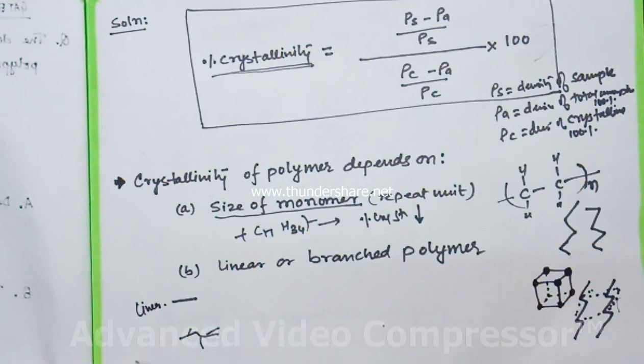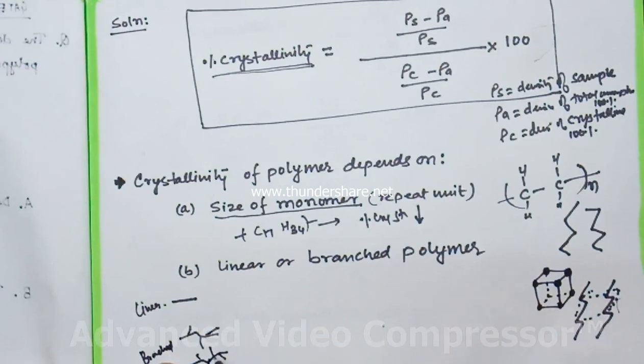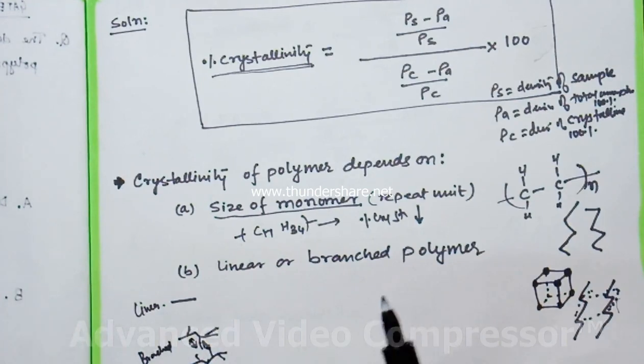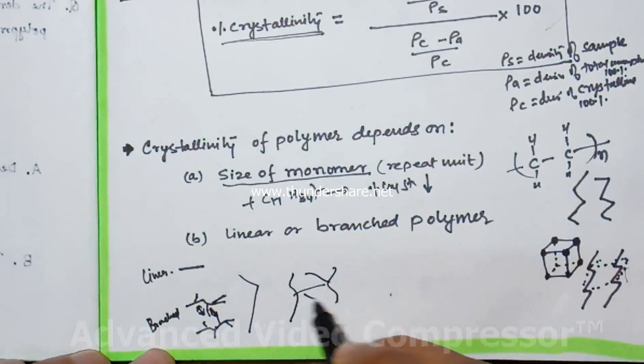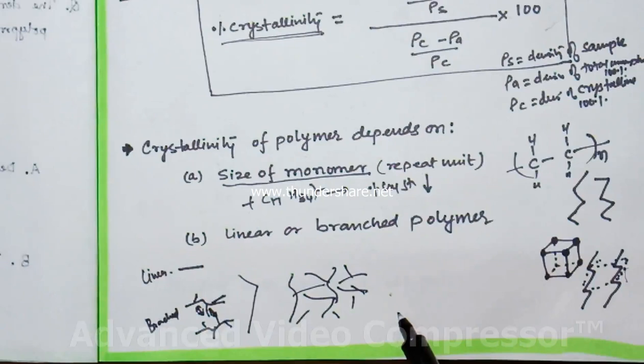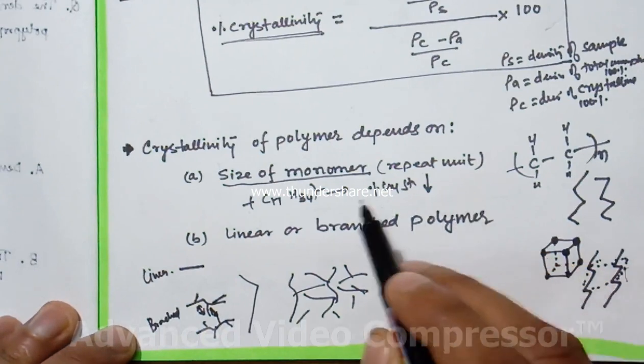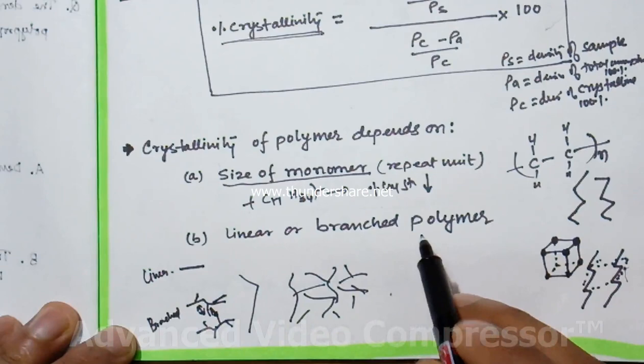But in the case of branched polymer, it tries to arrange but these branches will collide with each other and hinder their arrangement. When we increase the branches or networked polymer, it will be very difficult to get a crystalline structure. A networked or branched polymer will not have much crystallinity. They will be amorphous in most cases, with some crystallinity only in very small regions.